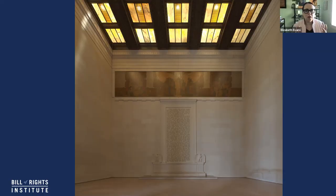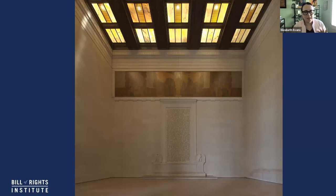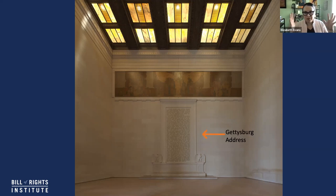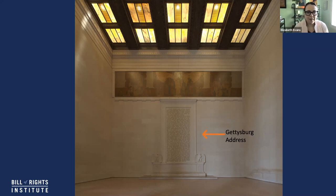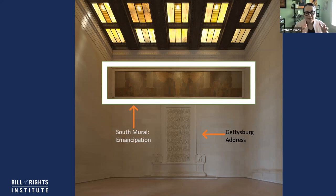Before we get started, I want to orient us to where we are. If you are looking at Lincoln, there are going to be inscriptions on both sides. I am on the side where the Gettysburg Address is — that's the inscription underneath — and this is the mural we're going to take a look at today. This mural is entitled Emancipation. If you look on the other side, you will see the second inaugural address and a different mural, but today we're going to focus on the south mural.